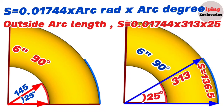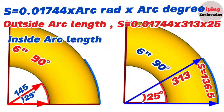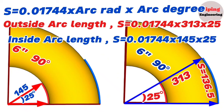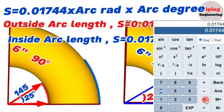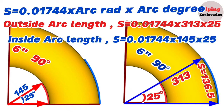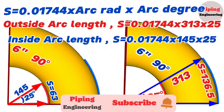For the inside red arc: S equals 0.01744 × 145 × 25 equals 63 millimeters. So the 25-degree inside arc length is 63 millimeters.